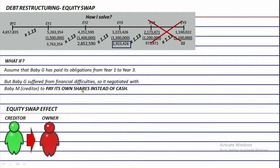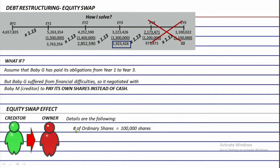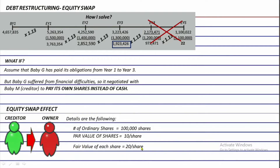We need to know some information about the shares that will be given up by Baby G as the debtor. In our illustrative problem, the number of ordinary shares to be given up is 100,000 shares. The par value of each share is 10 per share, but it is sellable in the market for 20 per share. The question is: what will be the journal entry related to the equity swap?